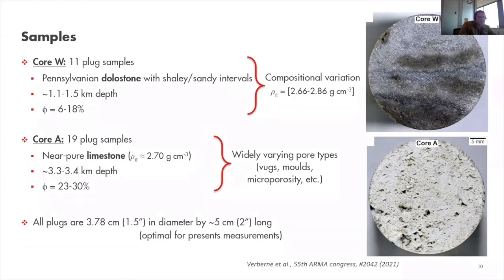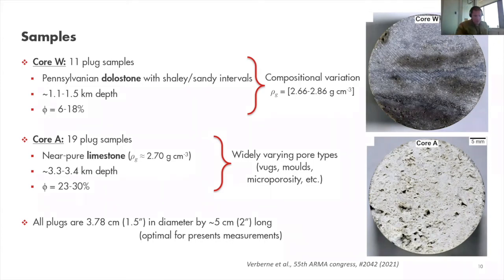The grain density in Core W varies from 2.66 to 2.86 across the plugs. Core A samples, by contrast, consist of 19 plug samples of near-pure limestone — as seen in the grain density — extracted from 3.3 to 3.4 kilometers depth, considerably deeper than Core W. These are Miocene limestones, and the particularly interesting aspect of this sample suite is that they are characterized by widely varying pore types: vuggy, moldic, and microporous samples.